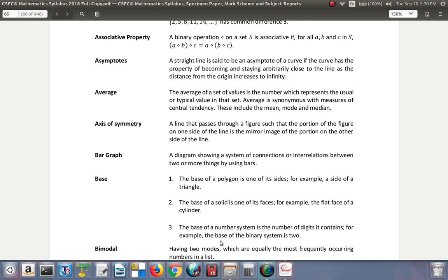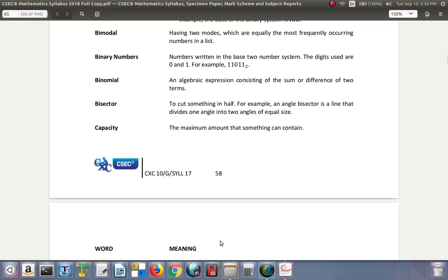Bimodal: having two modes which are equally the most frequently occurring numbers in a list. If two numbers each occur three times and all others occur fewer times, you have two modes - it's bimodal. Binary number: a number written in base 2. In base 2, the digits used are 1 and 0. For example, 11011 subscript 2 shows it's base 2.